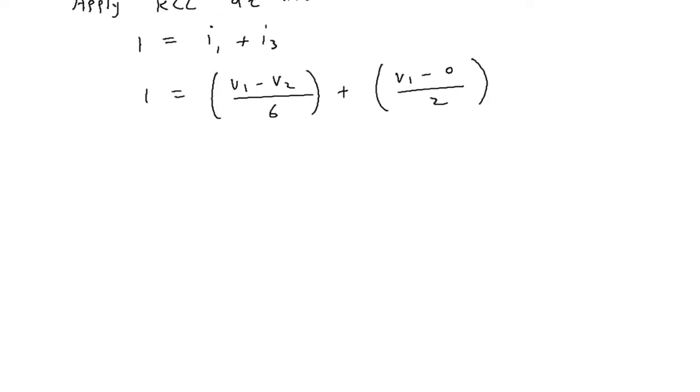Now if we simplify this or if we multiply both sides by 6, this will be 6 equals V1 minus V2 plus 3V1, which gives 6 equals 4V1 minus V2. Let's say this is equation number 1.